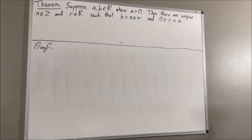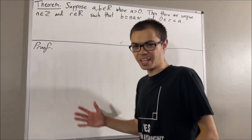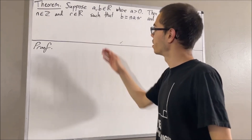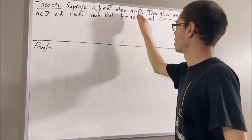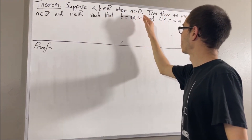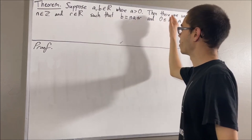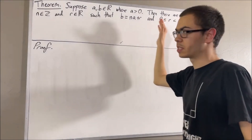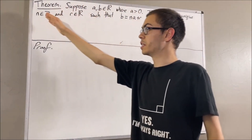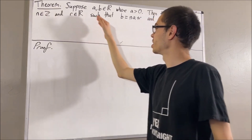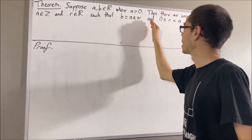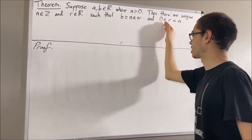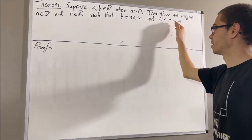Hello! In this video, we are going to prove the following theorem. Suppose a and b are real numbers where a is greater than 0. Then there is a unique pair of numbers — an integer n and a real number r — such that b is equal to na plus r, and 0 is less than or equal to r, which is less than a.